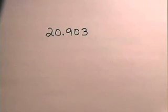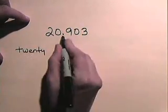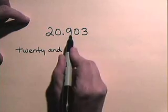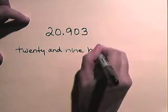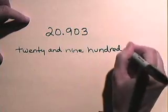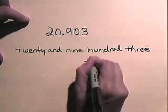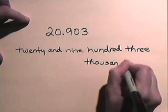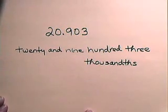Now we are going to read and write decimal numbers. Let's look at the following exercise: twenty point nine oh three. Let's write that using our decimal places. This will be twenty and nine hundred three thousandths — the three is in the thousandths place. So this number will be written and read as twenty and nine hundred three thousandths.